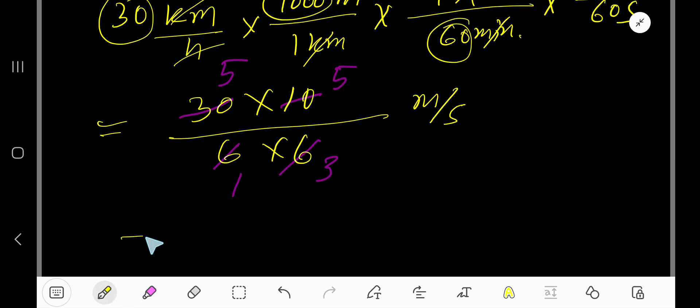So we're getting 5 times 5 equals 25 divided by 3 meters per second. Now divide 25 by 3. 3 goes into 25 how many times? 8 times. 8 times 3 equals 24.